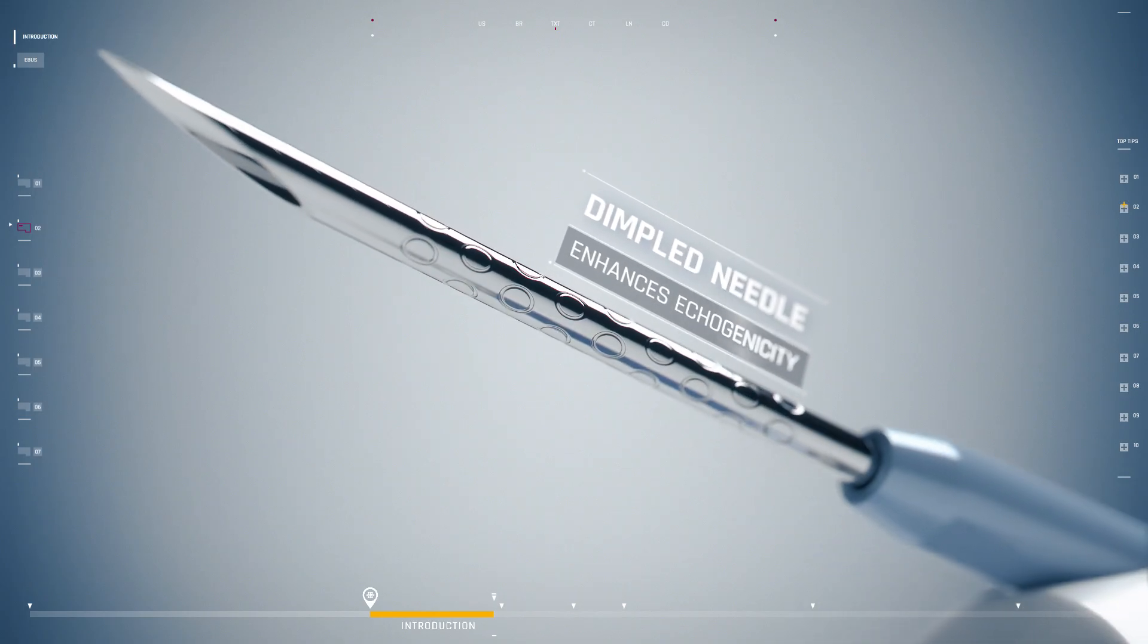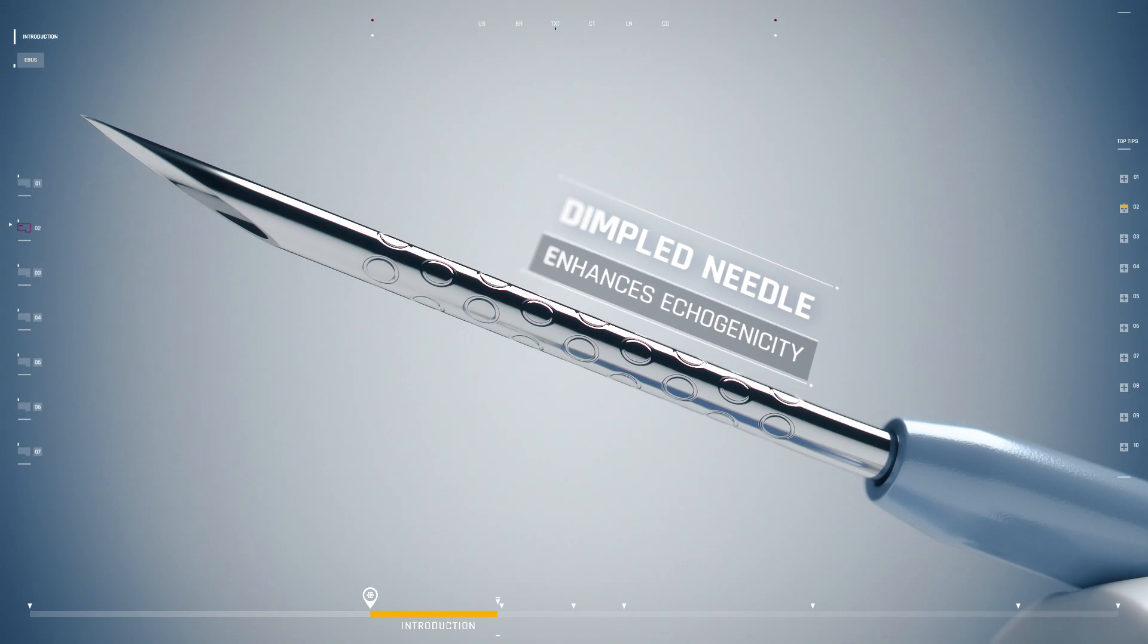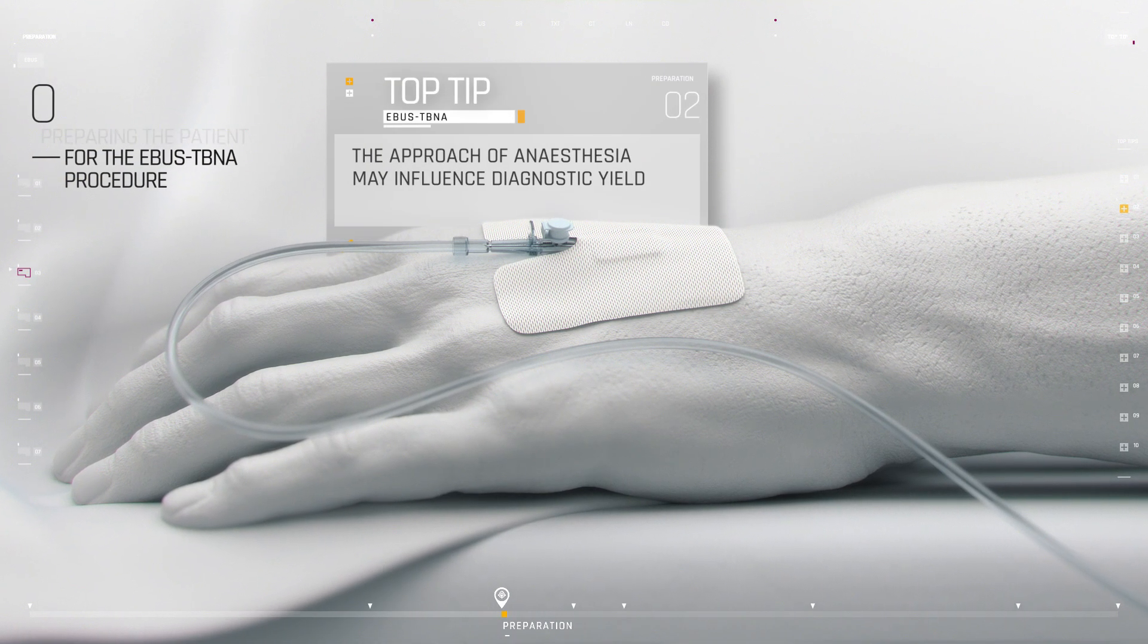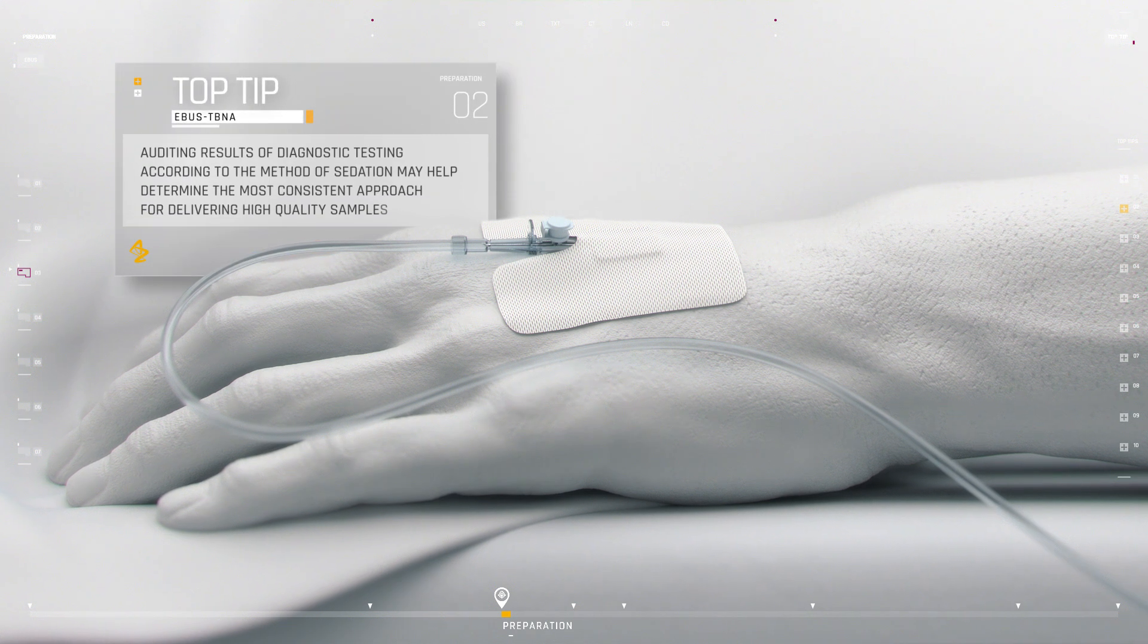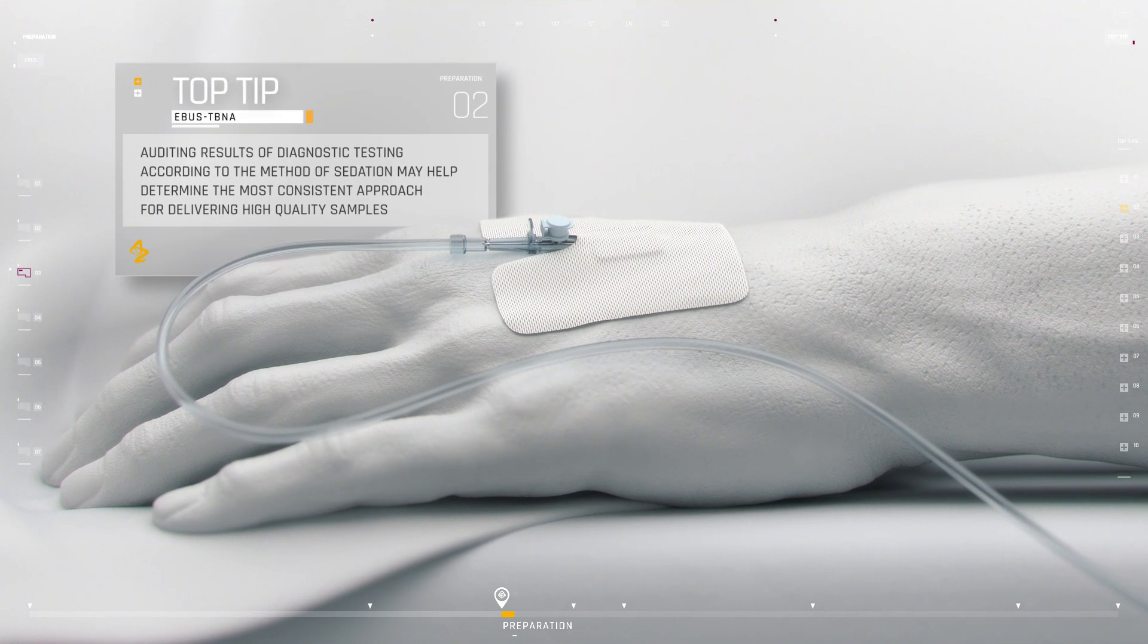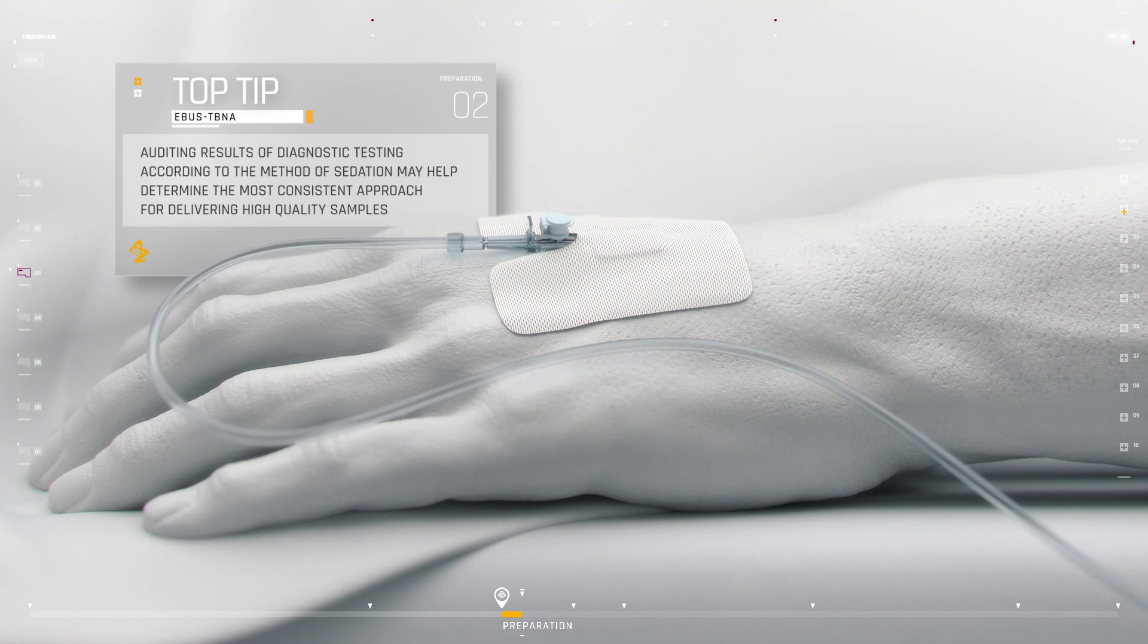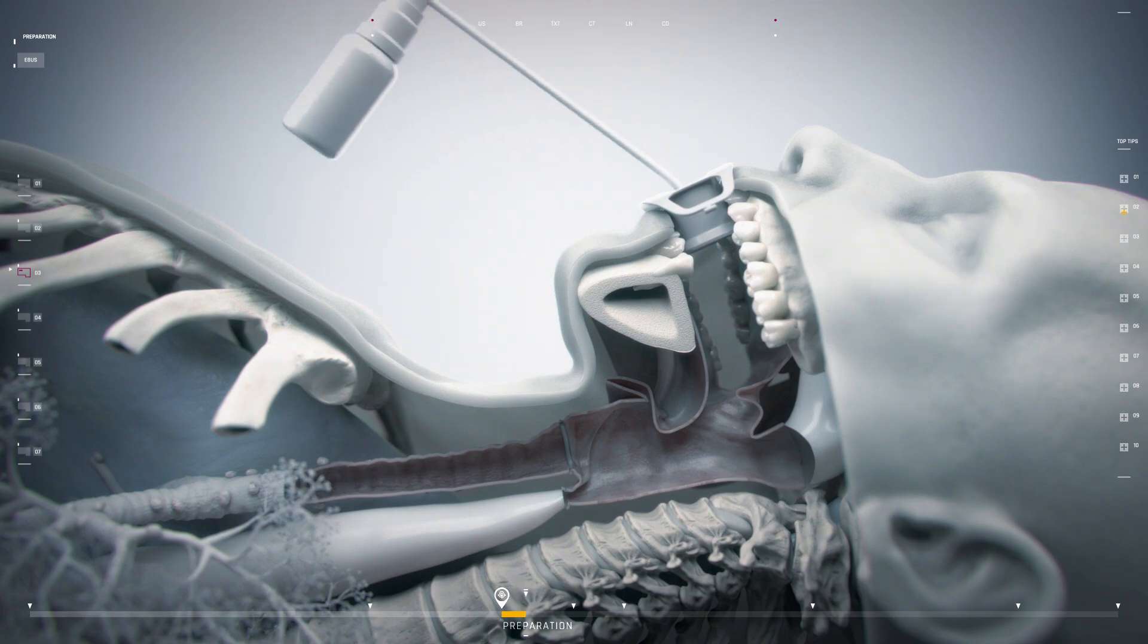The EBUS procedure may be performed under conscious sedation, deep sedation with anesthetic support, or general anesthesia, depending on the anticipated length of the procedure and local practices. Local anesthetic is administered to minimize coughing and discomfort.